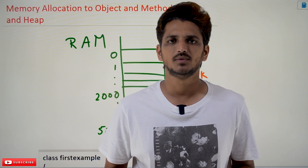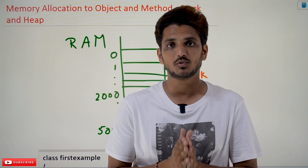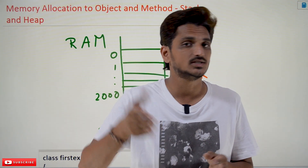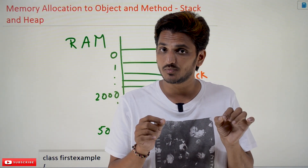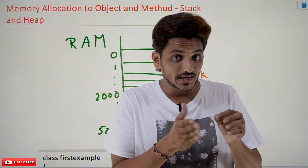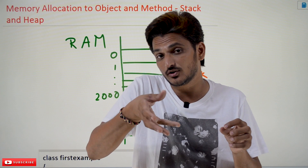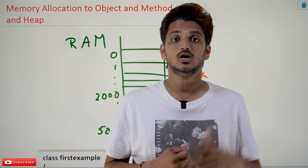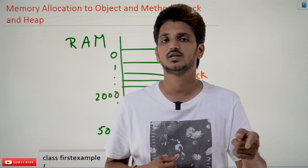Hi, welcome to Learning Monkey. I am Raghuvir. In this class we will discuss about how memory is allocated to objects and methods in Java. In our last class we clearly discussed about what is instance and local variables. You are going to understand better what instance variables are, how memory is allocated to instance variables. The same example we are using from our last class.